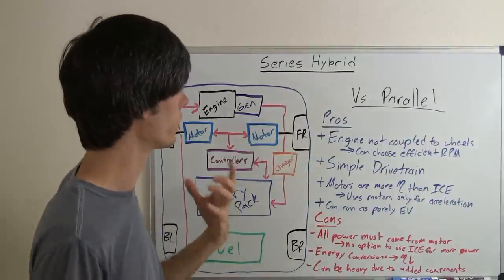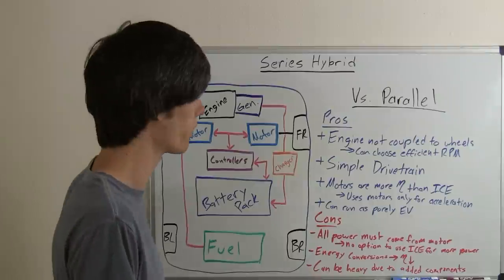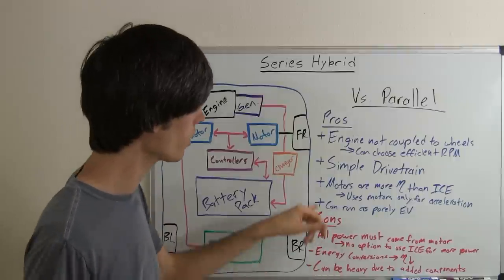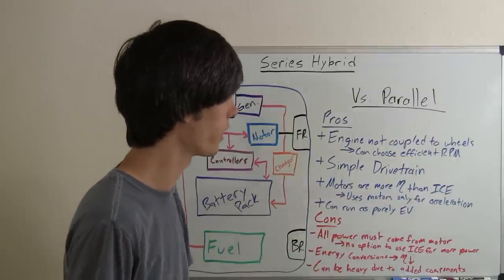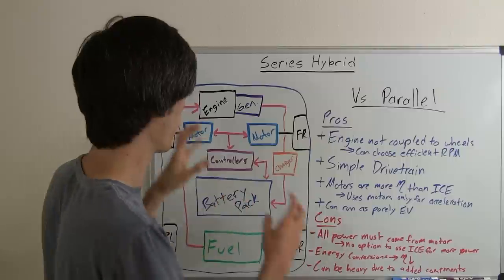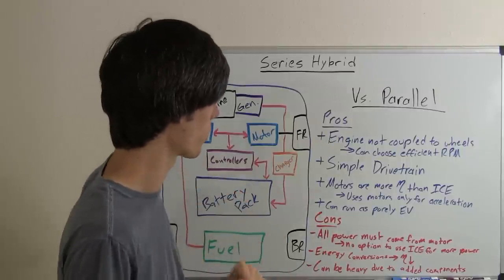Also, it's a pretty simple drivetrain. In my next video on parallel hybrids, you'll see that the transmission is kind of a complicated thing because you're linking the motors and an engine. Motors are more efficient than internal combustion engines. And so because this is using just motors to power it and an efficient engine to charge, it can be a little bit more efficient.